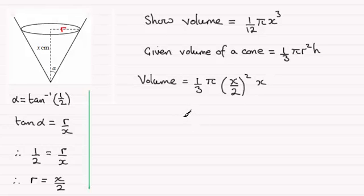And if I work this out, we've got 1/3 times π times x² over 4 times x, and that does indeed give us 1/12.